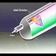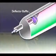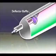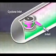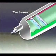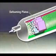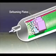Inlet diverters provide the initial gross separation by changing the flow direction as fluid enters the vessel. The deflector baffle shown here is one type of commonly used inlet diverter; another is the cyclone inlet. Wave breakers limit the wave propagation that might otherwise occur in large horizontal vessels. Defoaming plates reduce foaming at the gas-liquid interface.